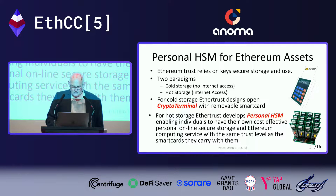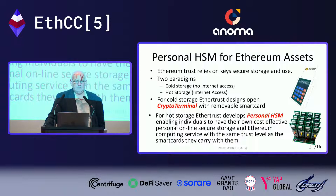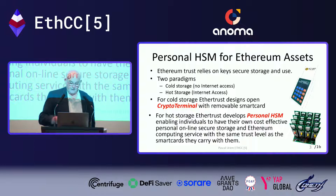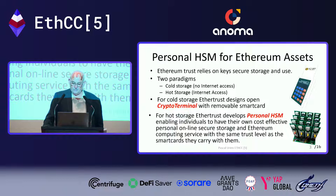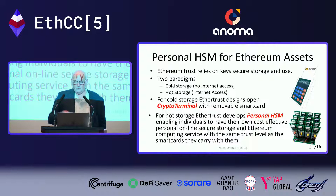About personal HSM for Ethereum assets: Ethereum trust relies on key secure storage and use. It means you have a private key, which is a 32-byte random value. From that, you compute a public key, and you use your private key to compute signatures. When the private key is stolen, you lose your asset, you lose the trust of the smart contract, and so on. So it's important to have secure storage and use of this key.